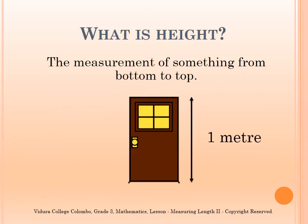What is height? Height is the measurement of something from bottom to top. Look at the picture given — it is a picture of a door. The height of the door is shown using an arrow and it is 1 metre.